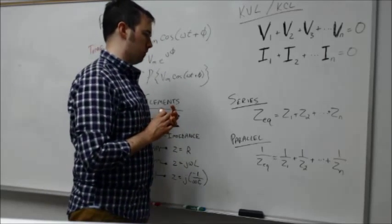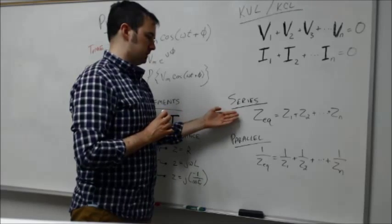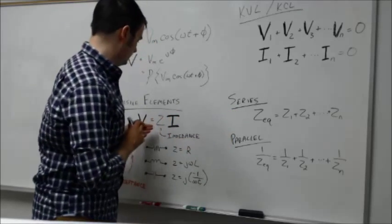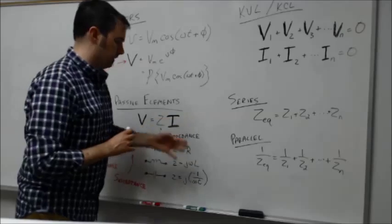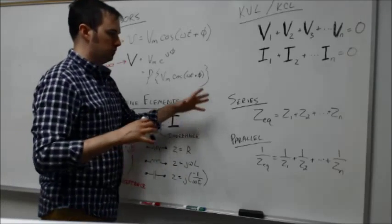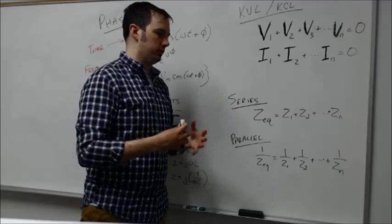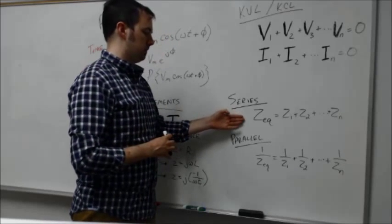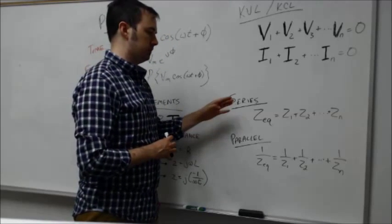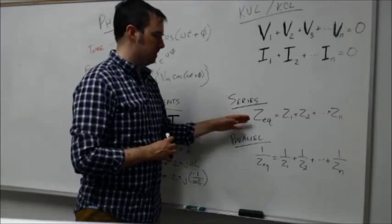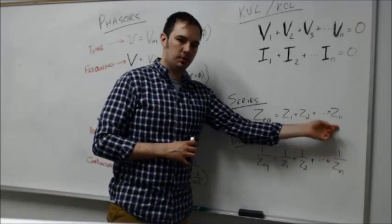Looking at these impedance terms, if you have multiple elements, you need to combine and reduce them down to some equivalent impedance. We worked out to find that if we have impedances in series, the equivalent impedance is simply the sum of those individual impedances.